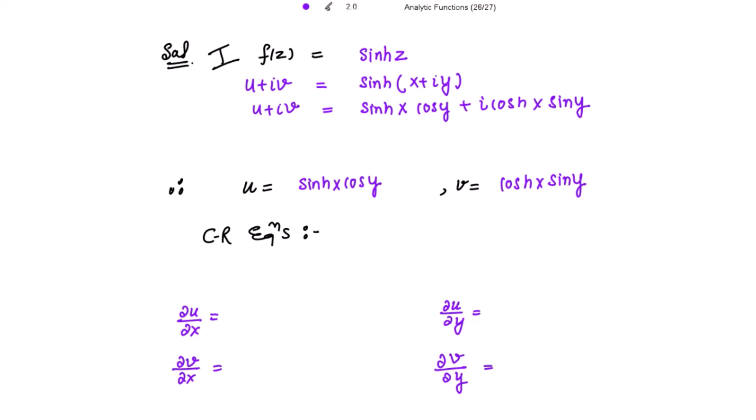We know that trigonometric functions — sine, cosine, sinh, and cosh — are always continuous functions. So let's check the CR equations now. We have to find the partial derivatives of u and v with respect to x and y, and then check whether they satisfy the Cauchy-Riemann equations.